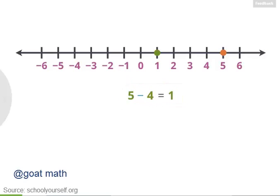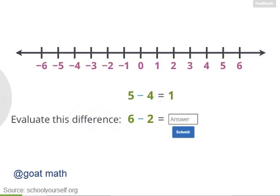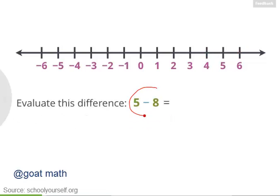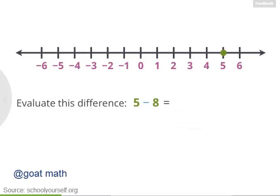Try using the number line to solve another example. What's 6 minus 2? By the way, difference is a word for what you get when you subtract numbers. Starting at 6 and moving 2 to the left leaves you at 4, so 6 minus 2 equals 4. What's 5 minus 8? If we start at 5 and move 8 to the left, we're now in negative territory — at negative 3. So 5 minus 8 equals negative 3. Whenever you have a positive number and subtract a bigger positive number, you'll wind up with a negative answer.